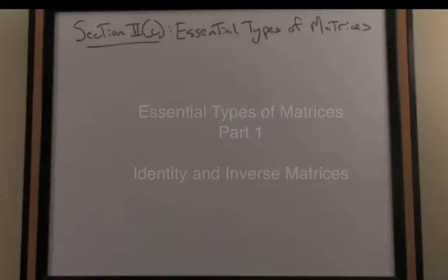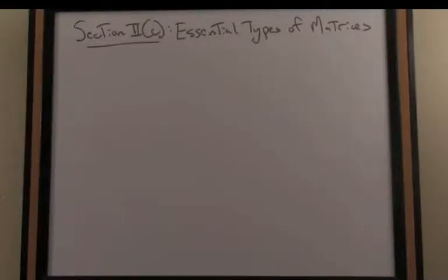In Section 2C, I'd like to talk about some essential types of matrices. To begin with, let's start with something called the identity matrix.